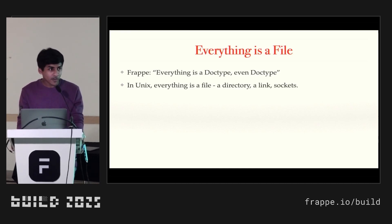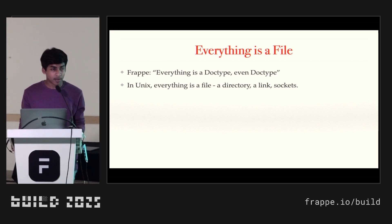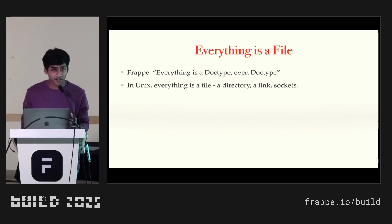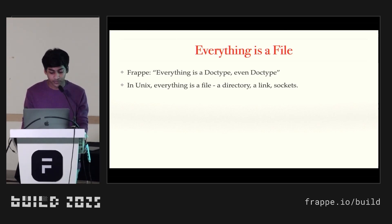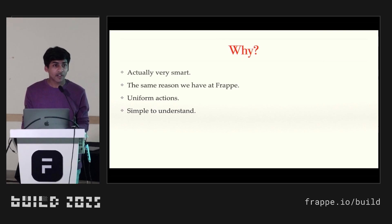In Frappe, we often have this very common quote: everything is a doctype, even a doctype. You might have heard of it if you've worked with the Frappe framework. Similarly, in Unix, everything is actually a file. We think that there's a separate folder, a separate symbolic link, but it's not like that. A folder is a file. A file is a file, of course. Even devices are files. Standard input, standard output — everything is a file in the Unix world. This might seem a little counterintuitive at first, but when you think about it, it's actually very smart. And it's the same reason we have everything as a doctype in Frappe — it makes things so much simpler.